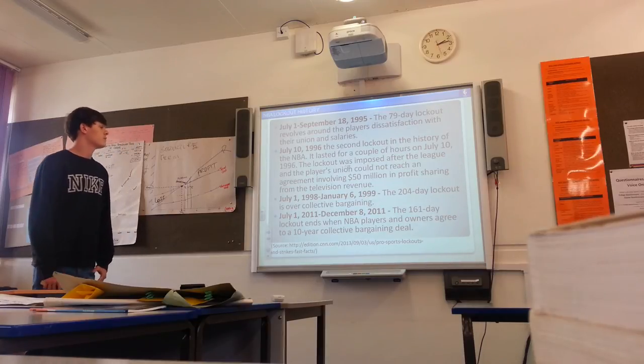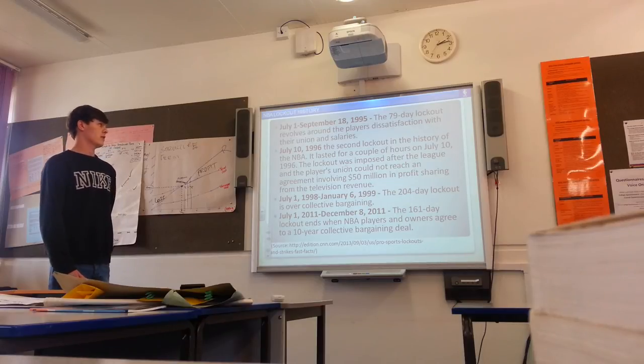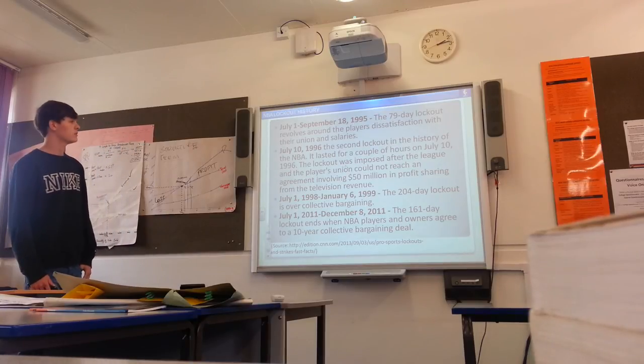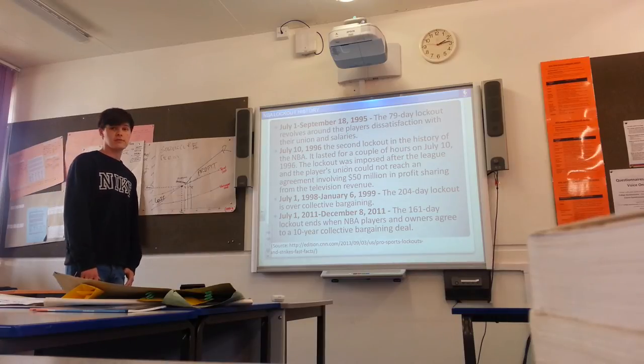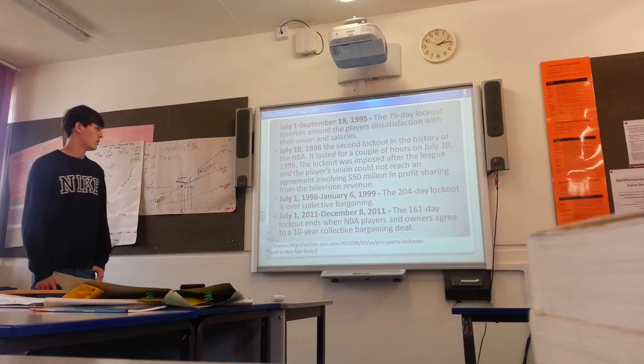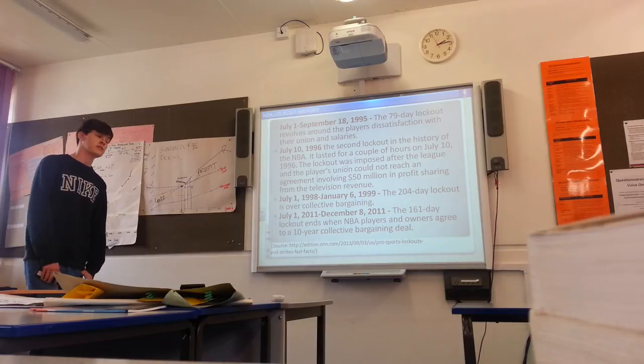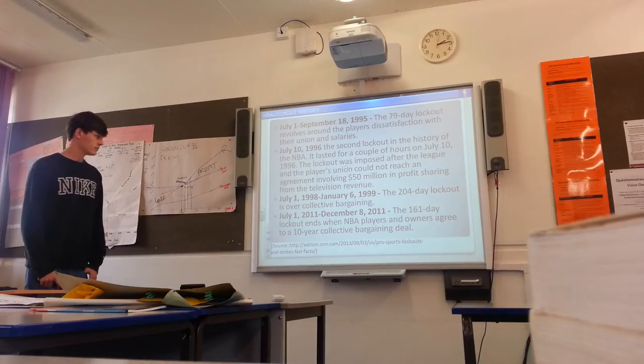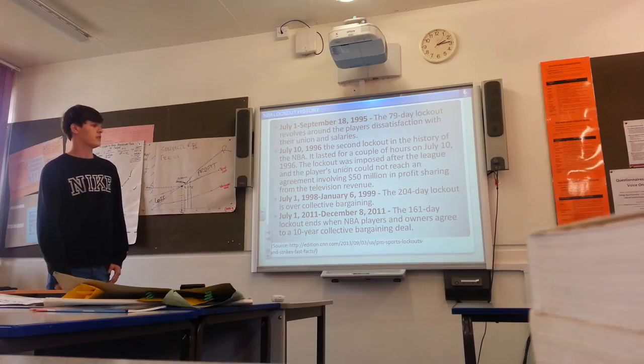Just a brief bit on the NBA's lockout history. The first one was in 1995, which lasted 79 days. And it revolved around the players' dissatisfaction with their union salaries. The second one was in 1996, and it only lasted for a couple of hours. It was imposed after the league and the players' union couldn't reach an agreement involving a $50 million profit sharing from television revenue. And the next one was the 1998-1999 lockout, and that was 204 days. And that was over the collective bargaining agreement.